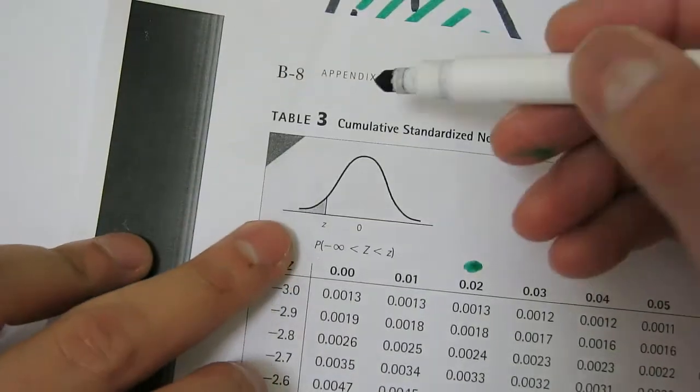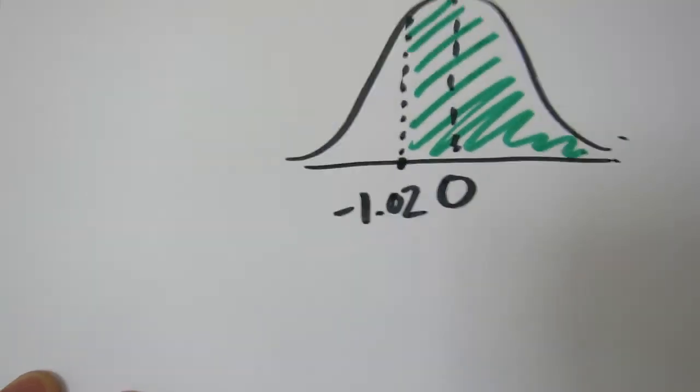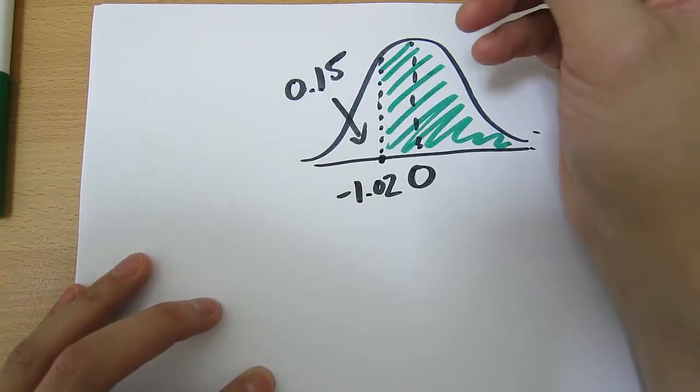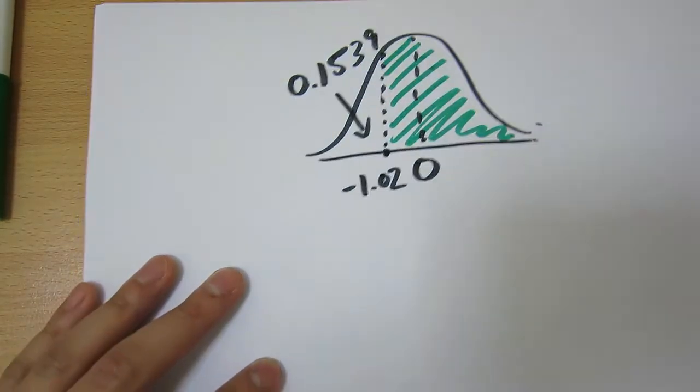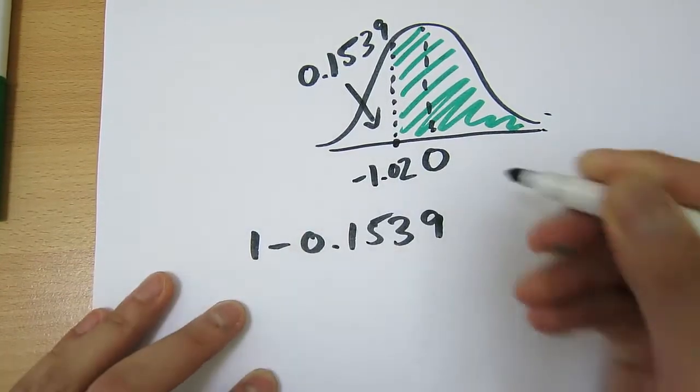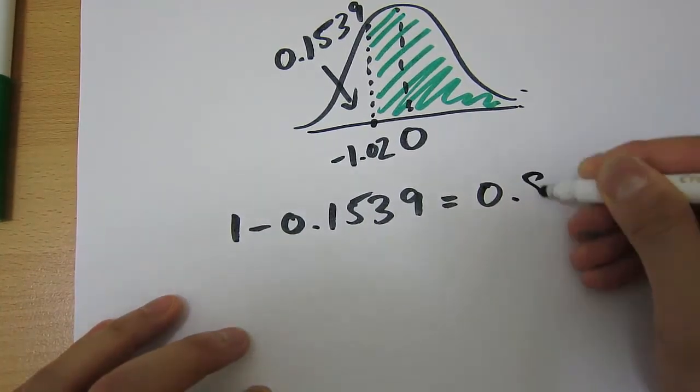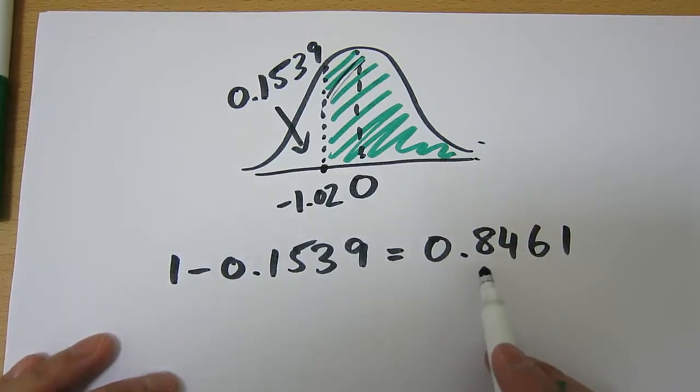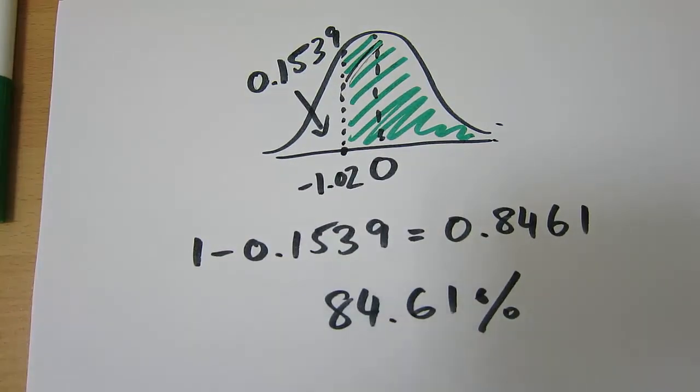However, this gives us a shaded region to the left of that Z-score. So what does that mean? That means that we know that this number here is 0.1539. So the green area, the area we're after, is 1 minus 0.1539. So basically what we know is that the area of this shaded region that we're after is 0.8461.